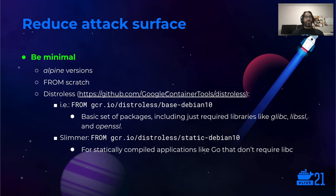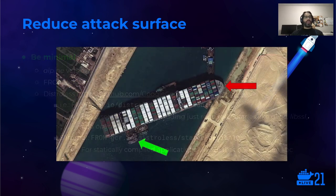In general, try to be minimal. Distributions like Alpine Linux are a common choice, and many official images provide Alpine-based versions. Ideally, you could build your container from scratch — an empty image — but this is usually not possible due to binaries depending on some basic system libraries or configuration files. The Distroless project from Google Container Tools is another common choice. They provide very slim, stripped-down images where everything but the essential libraries are removed. The base Debian 10 image will only include libc, libssl, and OpenSSL, and even the slimmer static Debian 10 can be used for statically compiled applications like Go that don't require libc.